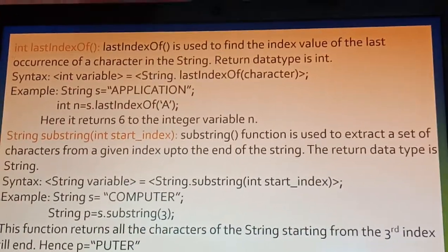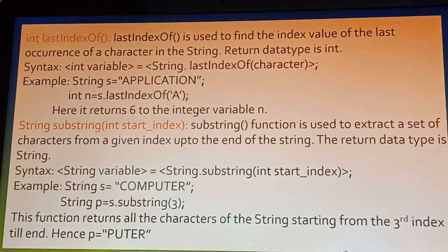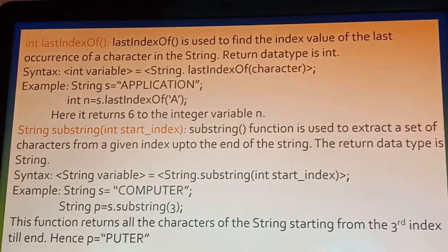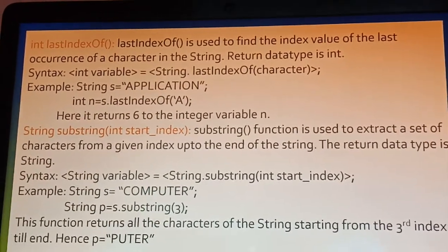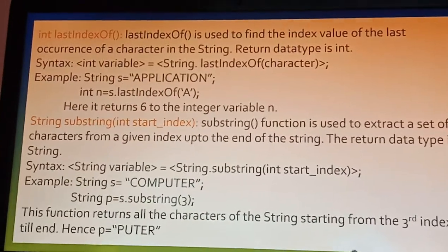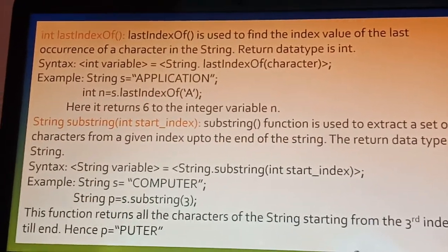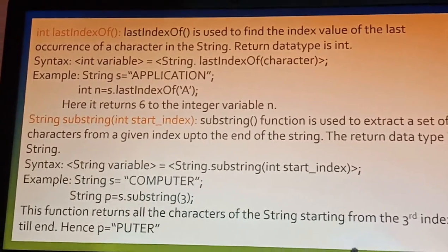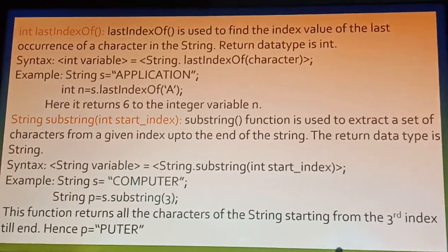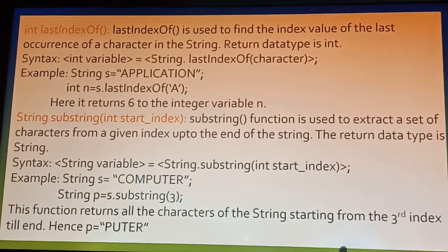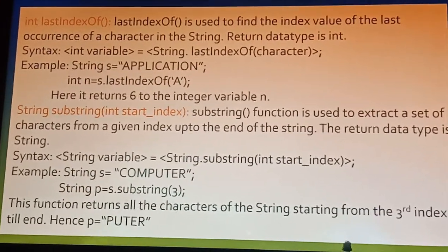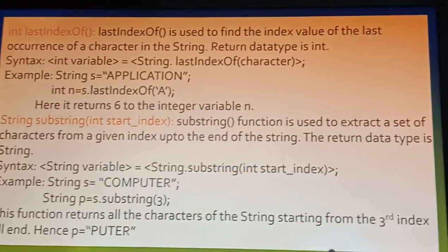Then lastIndexOf. The lastIndexOf function is used to find the index value of the last occurrence of a character in the string. The return data type is int. Syntax: int variable equal to string.lastIndexOf(character). For example, if 'application' is stored in variable s, and you want to find the last occurrence of 'a', then int n equal to s.lastIndexOf('a') returns 6, because the position of the last occurrence of 'a' is at index 6.